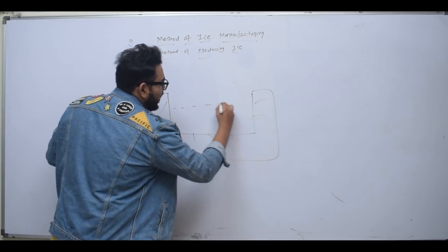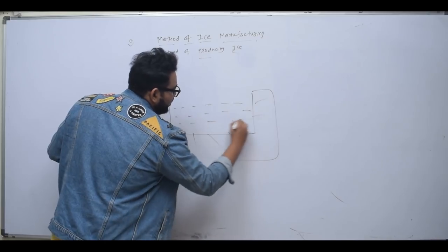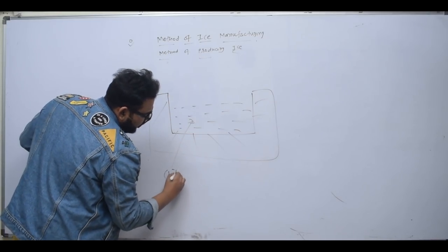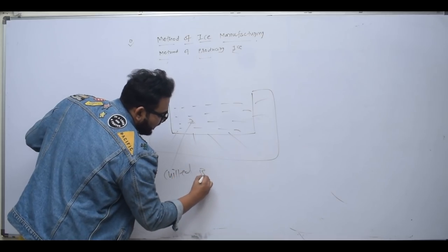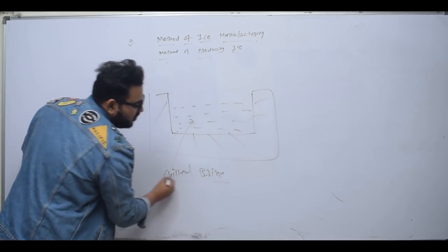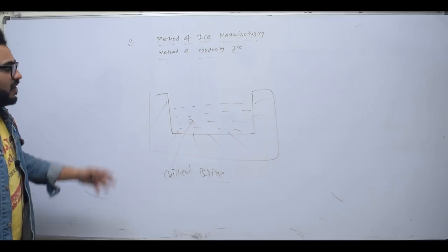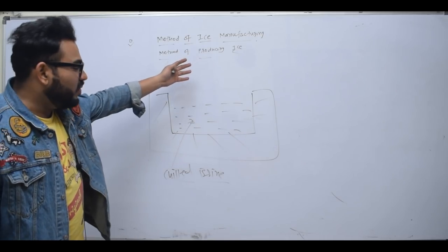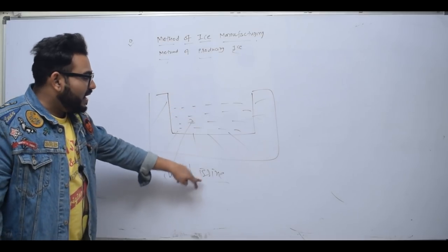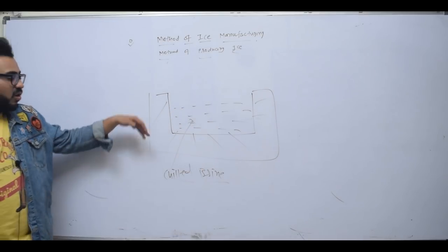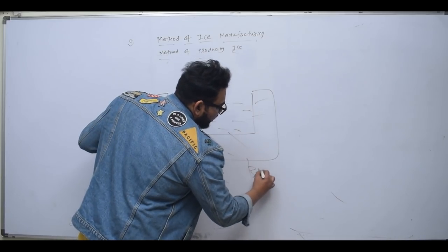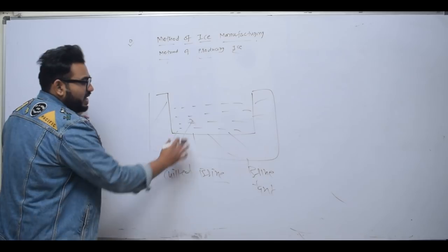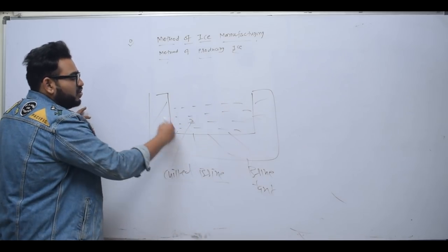Now we will put chilled brine here. What is brine? Brine is a refrigerant used for ice making. The brine will absorb heat from water and convert the water to ice. Here, the brine is your secondary refrigerant. This tank is called a brine tank because it is filled with brine, and it is insulated.